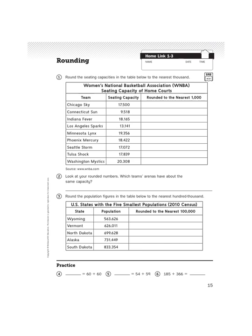Hi boys and girls, it's Mr. Wasserman and today we are looking at Homelinks 1.3 — that's Unit 1, Lesson 3 — and it has to do with the rounding of large numbers with multiple digits. So let's jump right in.